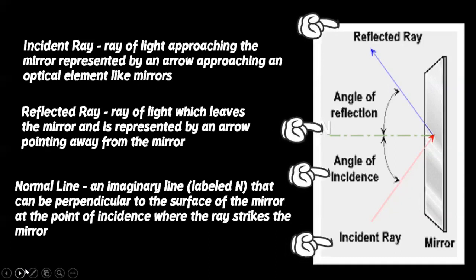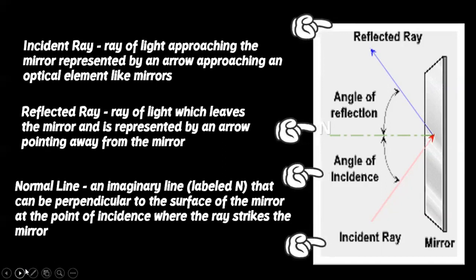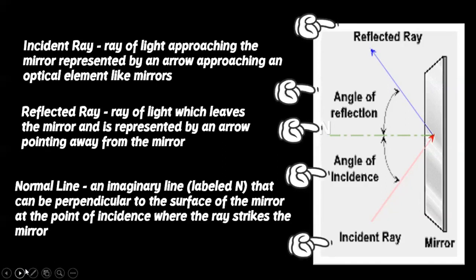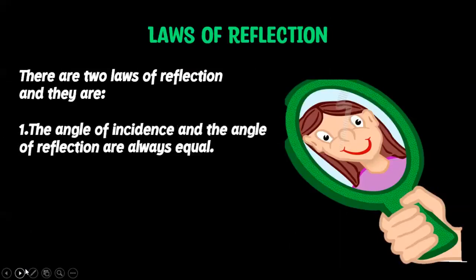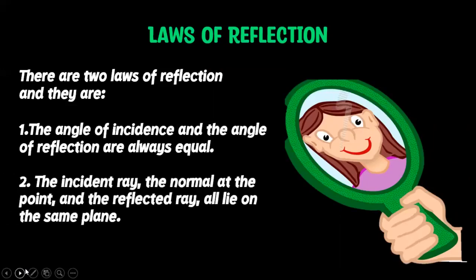The angle between the incident ray and the normal line is known as the angle of incidence. The angle between the reflected ray and the normal is known as the angle of reflection. We have two laws of reflection. First, the angle of incidence and the angle of reflection are always equal. Second, the incident ray, the normal at the point, and the reflected ray all lie on the same plane.